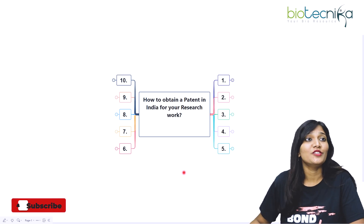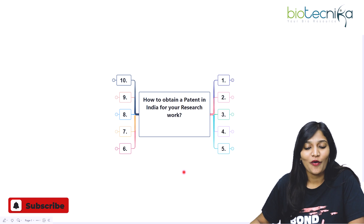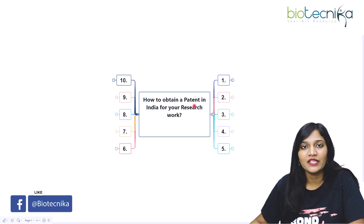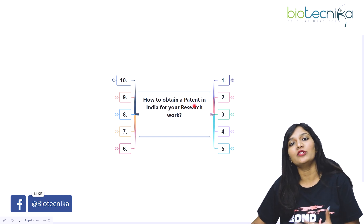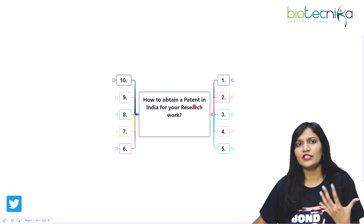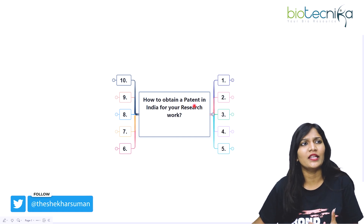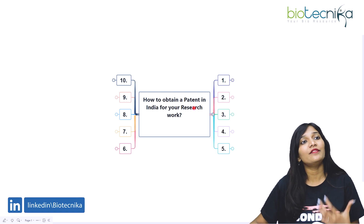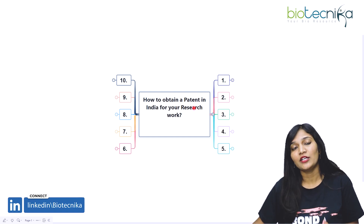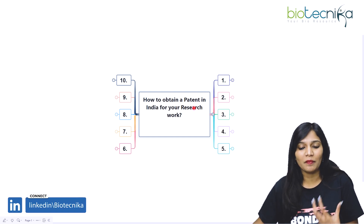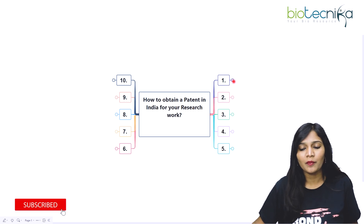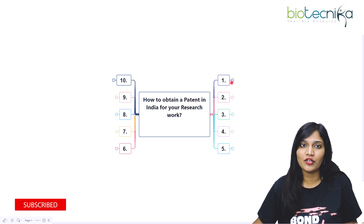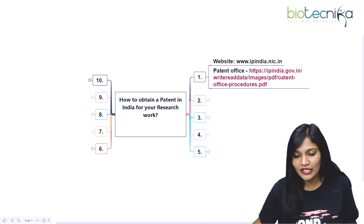Let's get into the video and understand what this is all about. First, let me talk about the patent and its properties. We already know that if you have found something novel — like drugs or any sort of mechanism — you can have rights to avail it. That is going to be the patent. In this video I'll be talking about how we can obtain a patent in India, not about international scenarios.